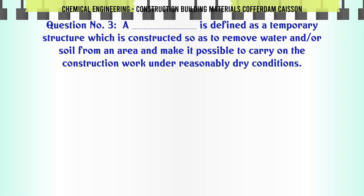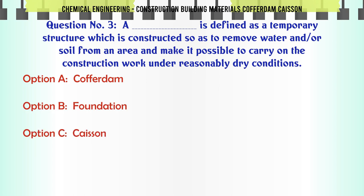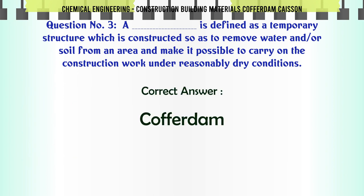Which is defined as a temporary structure which is constructed so as to remove water and/or soil from an area and make it possible to carry on the construction work under reasonably dry conditions? A. Cofferdam. B. Foundation. C. Caisson. D. Spillway. The correct answer is: Cofferdam.